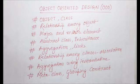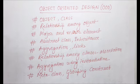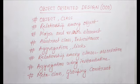In software engineering, a class diagram is a UML type of static structure diagram that describes the structure of a system by showing the system's classes, their attributes, operations or methods, and relationships among objects. A class diagram is a static diagram that presents a static view of an application. It is used not only for visualizing and documenting different aspects of a system, but also for constructing executable code of the software application. It describes the attributes and operations of a class and the constraints imposed on the system.